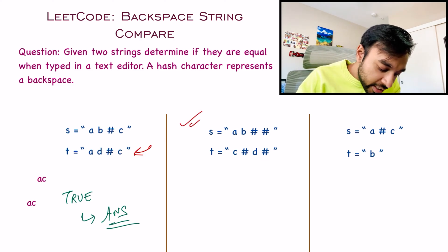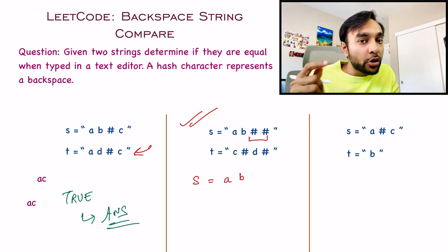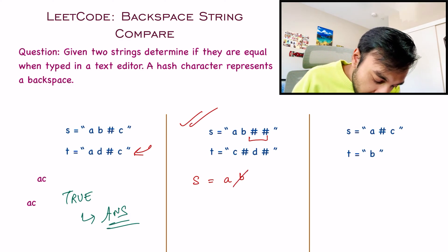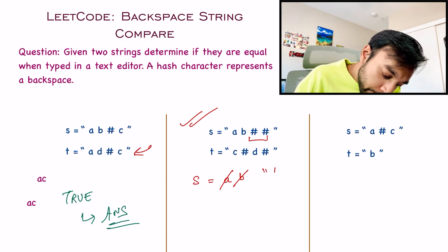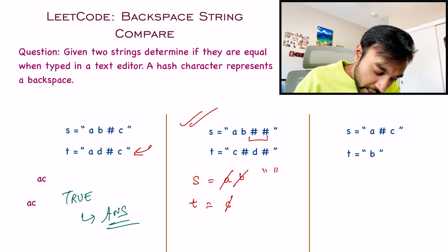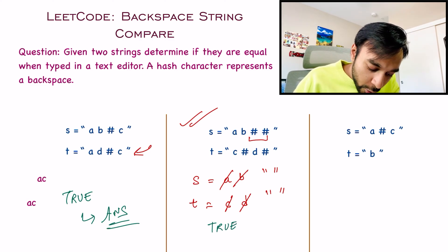Similarly, you can work out test case number two. String S has A, then B, then two hash characters — pressing backspace twice — so B is deleted, then A is deleted, and the string S becomes an empty string. Now look at string T: I have C then press a backspace, then D then press a backspace again. So T also translates to an empty string. Both are the same, so I return true.